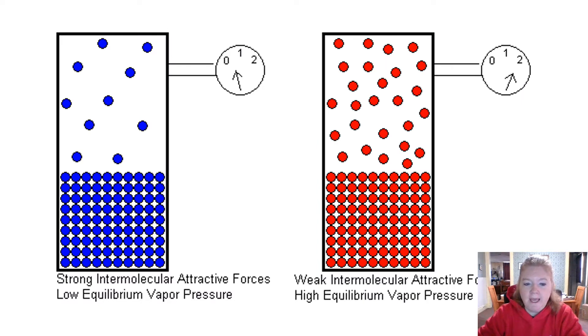If we have a low vapor pressure, it's most likely due to strong intermolecular forces holding particles closer together, so there's less pressure to form a gas. When there are weak intermolecular forces, there's a higher vapor pressure and a higher tendency to evaporate.